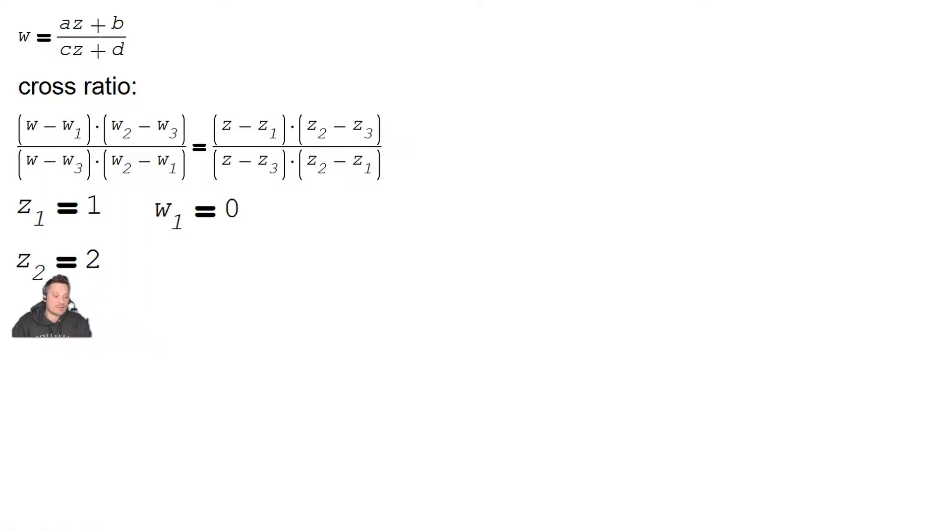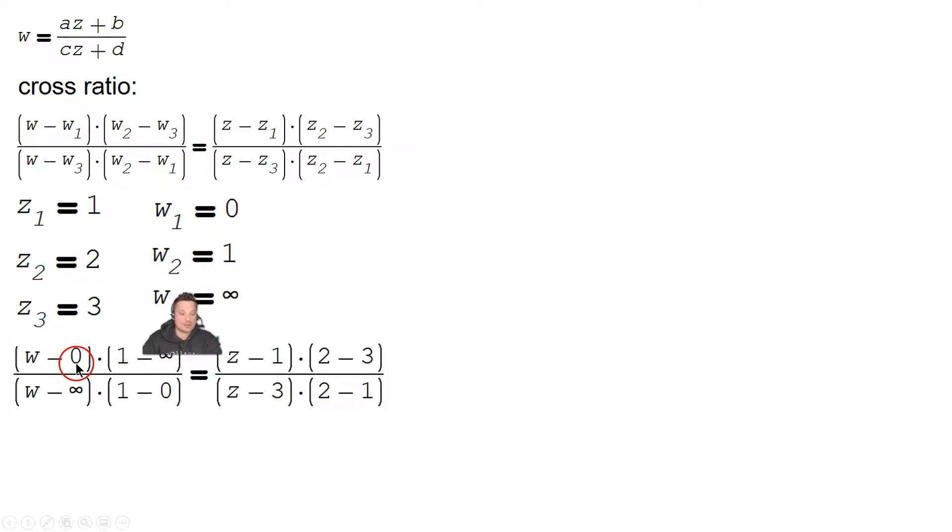Okay, so here you have that Z2 is equal to 2, and let's say when I feed that into my Moebius transformation, it's going to give me W2 equals 1. So input 2, output 1. Next, input is 3, Z3, in other words, and that's going to give an output equal to positive infinity. So what we need to do, basically, is take these values for Z and W and plug them into the cross-ratio. So let's do that.